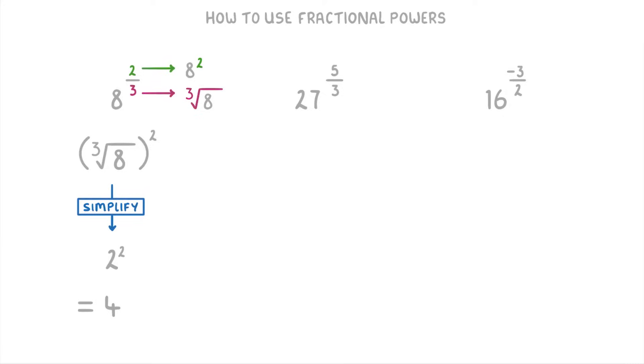Next up, we have 27 to the power of 5 thirds, which means we're going to have the cube root of 27 all to the power of 5. We can simplify this to 3 to the power of 5, which is 243.